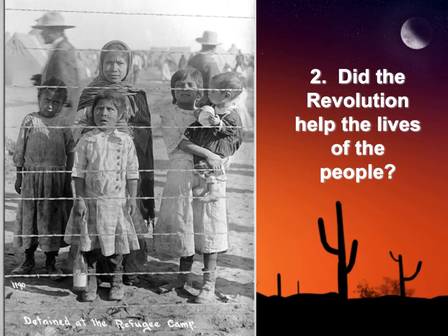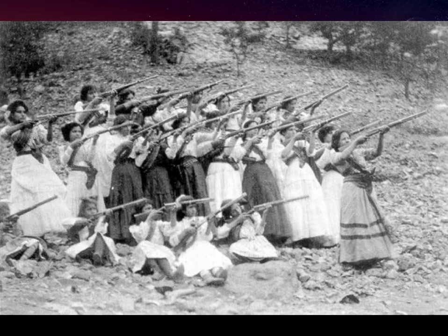General Obregón then took power and served under Carranza, who eventually made himself president. Carranza lived from 1859 to 1920. Essentially there was a civil war, with Carranza and Obregón fighting against Pancho Villa and Zapata — the two popular figures. The people of Mexico got involved, and there is a famous photograph of Mexican women shooting and participating in the revolution themselves. Carranza became president in 1916.